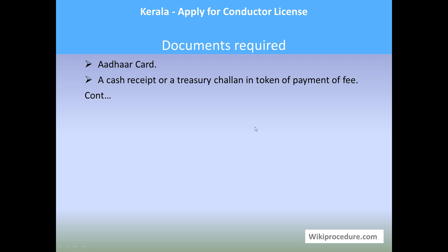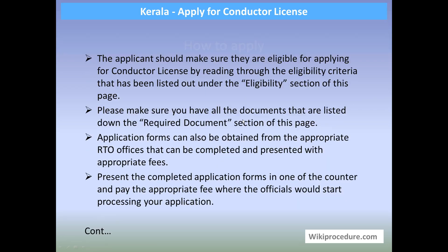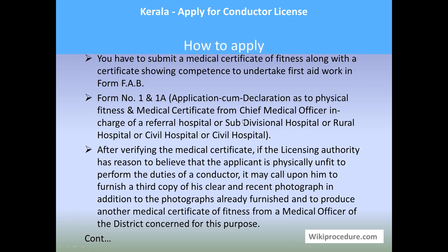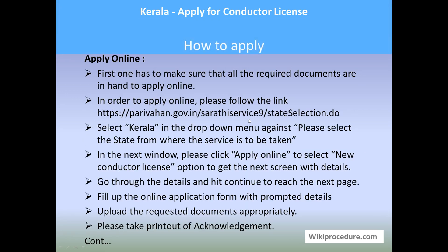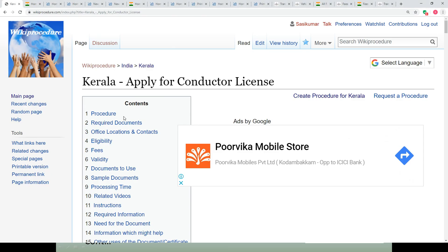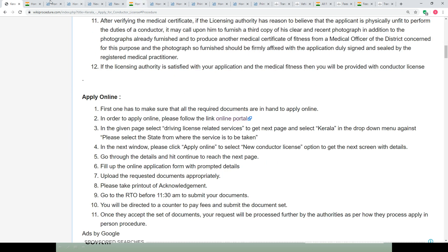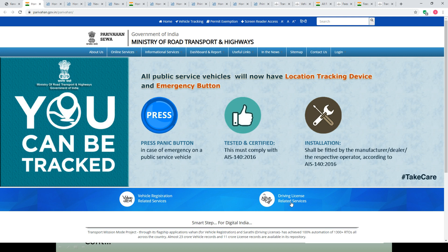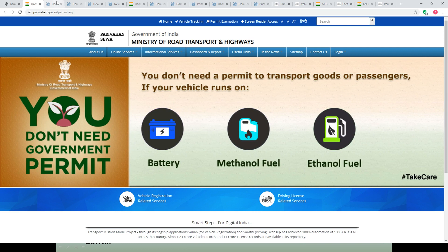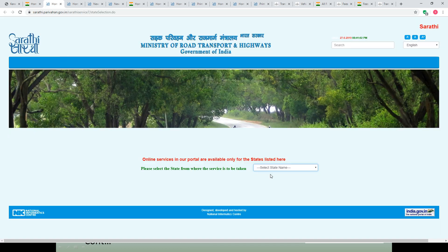Scan those documents which are scannable and keep them ready for applying online. First, make sure that all the documents are in hand, scanned, and kept in a separate folder. To reach the online portal, wikiprocedure.com has provided a link under the online session. Use this link to reach the page where the user has to select the driving license related option.